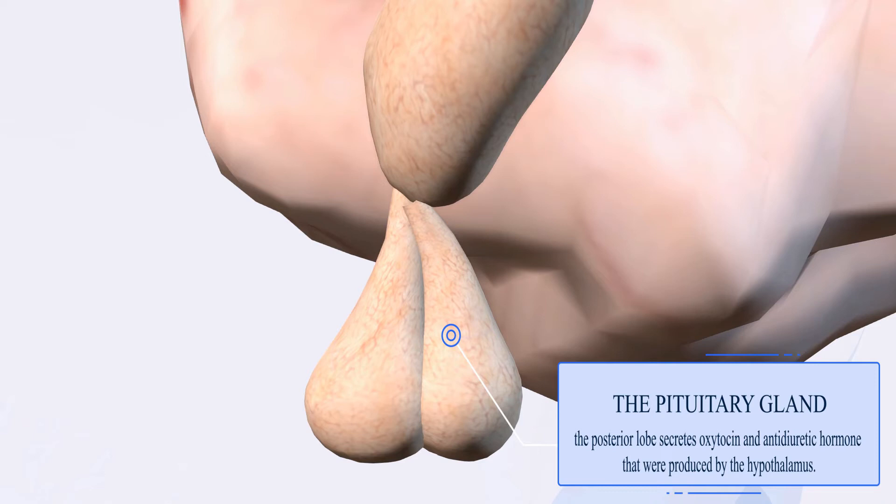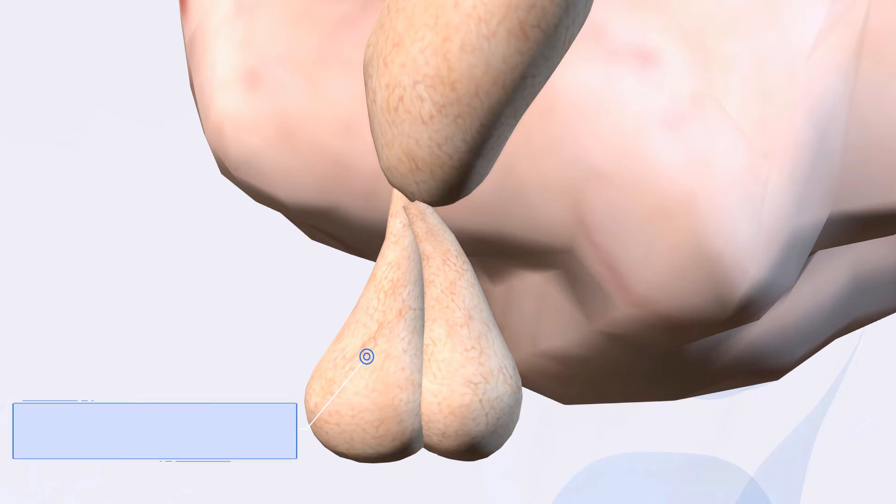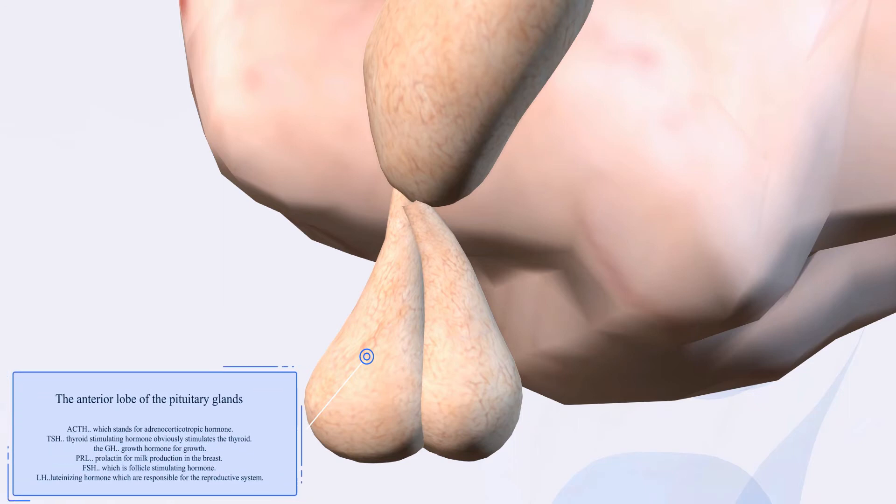The anterior lobe of the pituitary glands actually secretes many hormones, including ACTH which stands for adrenocorticotropic hormone, TSH thyroid stimulating hormone, GH growth hormone for growth, PRL prolactin for milk production in the breast, FSH follicle stimulating hormone, and LH luteinizing hormone which are responsible for the reproductive system.